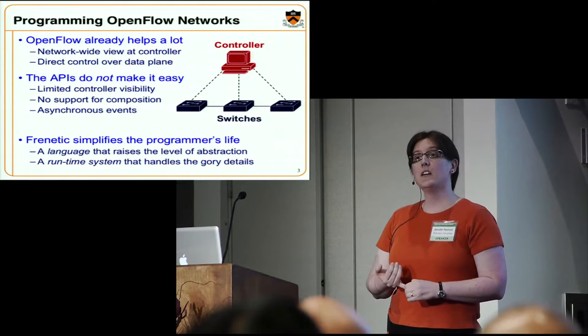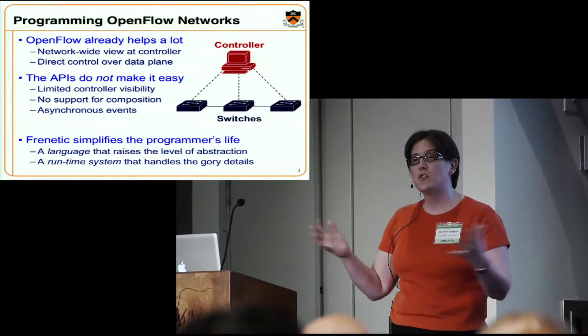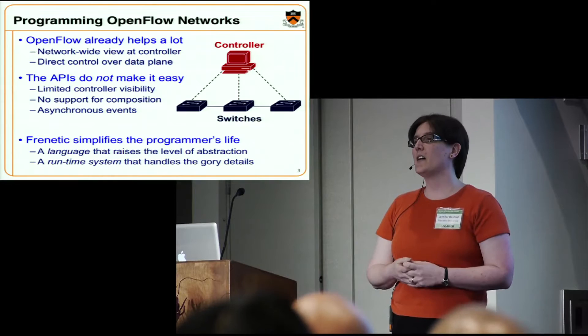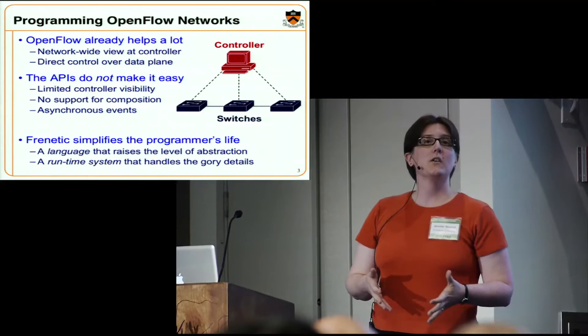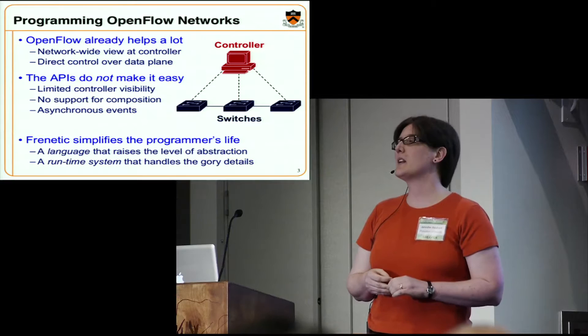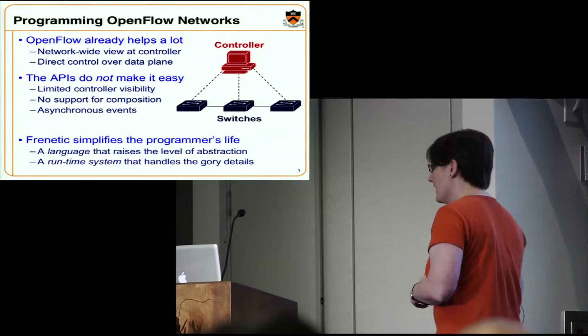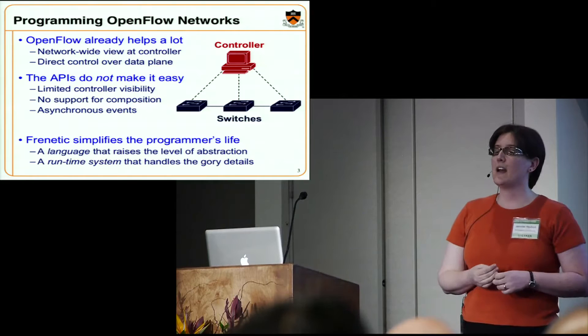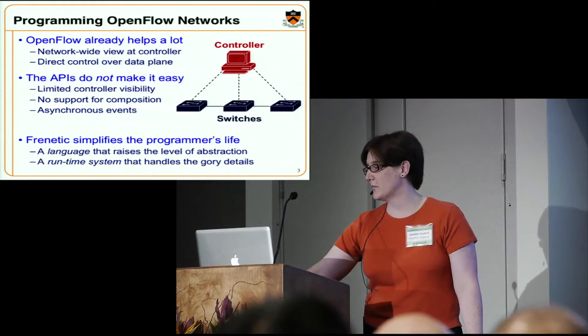It doesn't support composition. If you want to write three applications — one for routing, one for monitoring, one for access control — and then combine them all together, you have to do a fairly complicated dance to tease apart how to do that. And finally, despite thinking of the controller as a centralized entity, this is a distributed system. We have switches, events, packets arriving at different places and times. Race conditions can happen, even if you want to think of it conceptually as a centralized programming model.